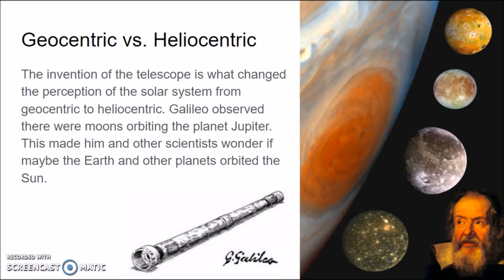When Galileo first started proposing that the Sun was at the center of the solar system, it was very controversial. People thought he was crazy. In fact, he was even jailed for a while because what he was saying went against the Bible and people just didn't believe it could possibly be true. But we now know because of scientific observations that he was correct.